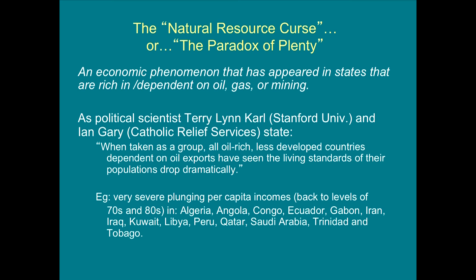This leads us to what we've talked about a lot. I'm taking a quote from Bottom of the Barrel about what the natural resource curse is as a blanket explanation. Another term is the paradox of plenty — so many revenues come in that you would think countries would become immensely wealthy and develop toward industrial modernization, but that hasn't happened. The key definition: when taken as a group, all oil-rich less-developed countries depending on oil exports have seen the living standards of their populations drop dramatically. Per capita incomes have plunged in all of these states — not all of them African — and this is important for understanding the dynamics of much of the conflict we see in the world today.